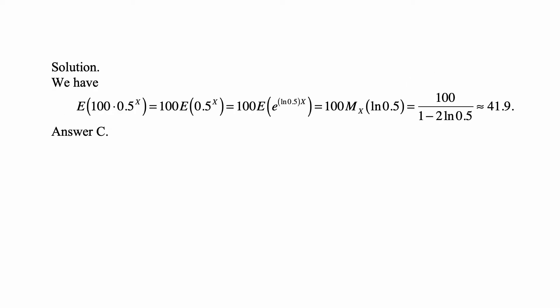This is a straightforward application of the definition of the moment generating function. We're looking for the expected value of 100·(0.5)^x, which is 100 times the expected value of (0.5)^x, which is 100 times the expected value of e^(ln(0.5)·x). By definition of the moment generating function, that's 100 times the moment generating function of x evaluated at ln(0.5).